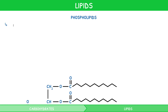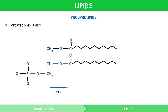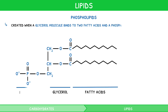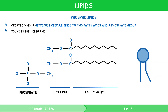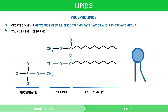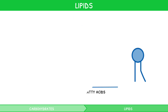Phospholipids are created when a glycerol molecule binds to two fatty acids and a phosphate group. They are found in the membrane and are represented using a simplified diagram. Phospholipids are discussed in detail in our IB Biology Topic 1 video series, so for more information, go and watch that now.